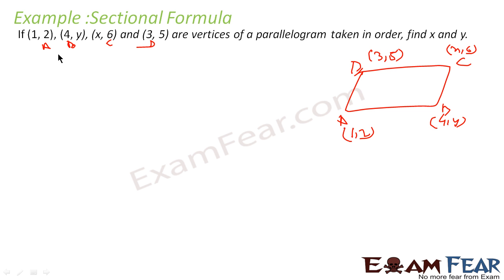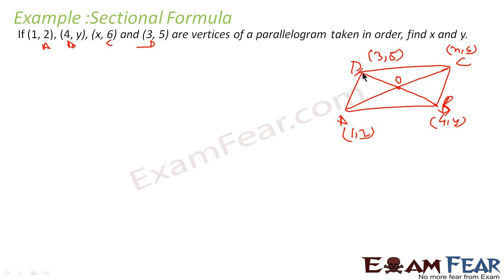Since they form a parallelogram, the diagonals will meet at a point. Let the midpoint be O. O will be the midpoint of AC and also the midpoint of BD, because in a parallelogram, the diagonals bisect each other.